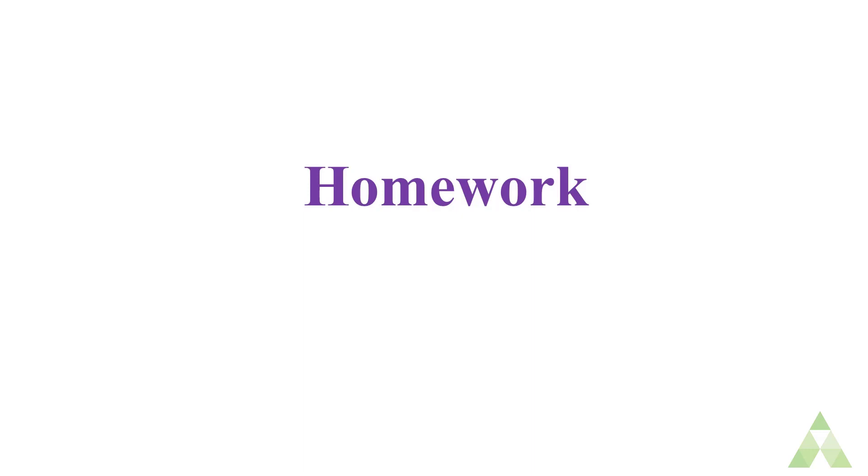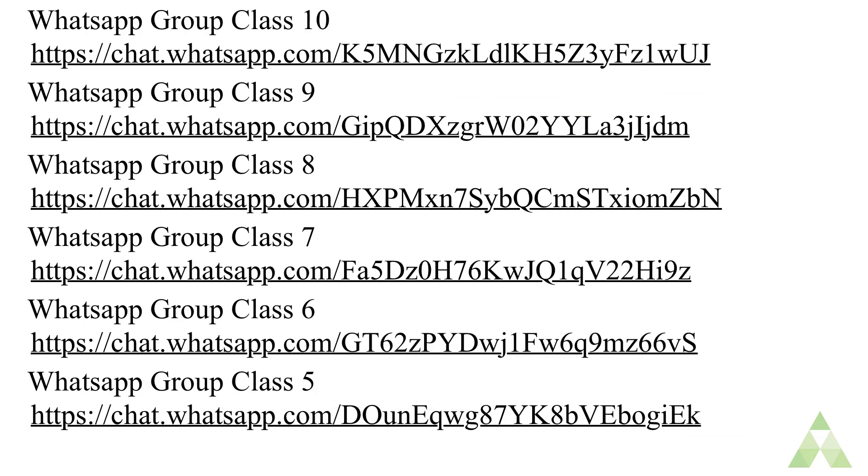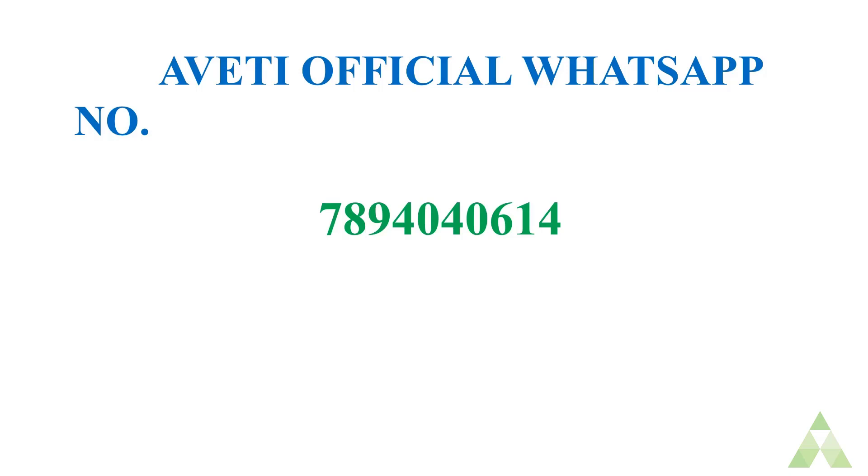Now it is homework time. You just have to fill in the blanks with appropriate preposition. The question is he has come dash Mumbai. Option A. From. Option B. On. Option C. Off. Option D. At. You will write this answer and send it to the WhatsApp group class 10. Here is the link which is given in this screen. If you are having any doubts, any kind of queries, any kind of questions, you can contact us through Aveti official WhatsApp number that is 7894040614.